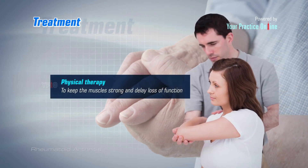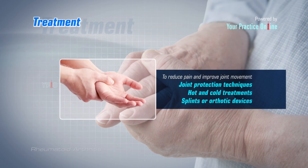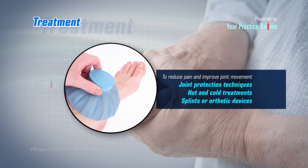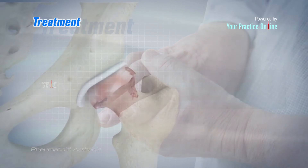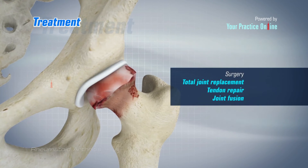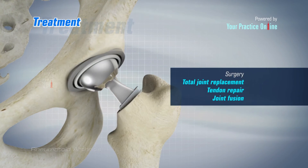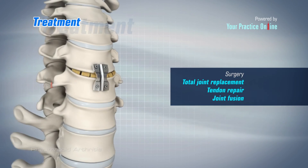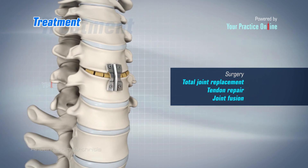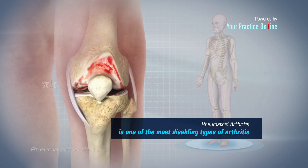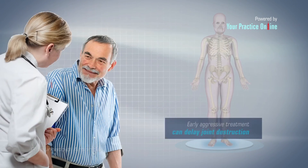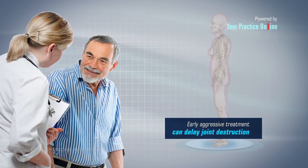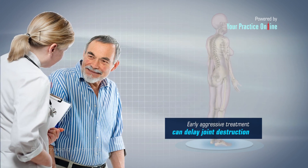Physical therapy is also recommended to keep the muscles strong and delay loss of function. Joint protection techniques, hot and cold treatments, and splints or orthotic devices may also be recommended to reduce pain and improve joint movement. If medications fail to prevent or slow joint damage, surgery such as total joint replacement, tendon repair, or joint fusion may be considered to reduce pain and repair damaged joints. Rheumatoid arthritis is one of the most disabling types of arthritis, and aggressive early treatment is crucial in lessening joint damage and preventing functional loss.